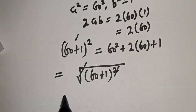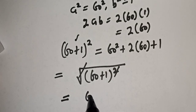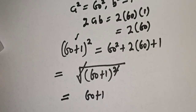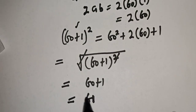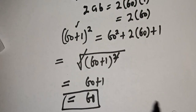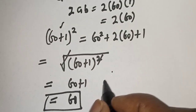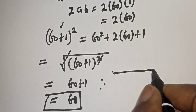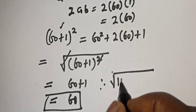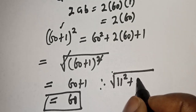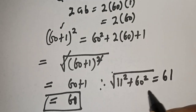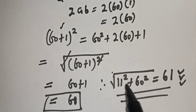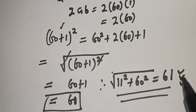We cancel the square root and the square, so this is equal to 60 plus 1, which is the final answer. Therefore, square root of 11 squared plus 60 squared is equal to 61. If you enjoyed the class, please don't forget to like, share, comment and subscribe. Thank you.